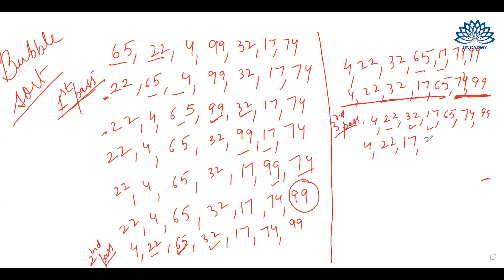After the swap, 17 comes here and 32 goes there. 22, 17, 32, 65, 74, and 99. We have set up our loop such that in the next iteration, the elements that are already sorted will not be processed in the loop. So we are left with only these 4 elements. The last 3 elements are already sorted.